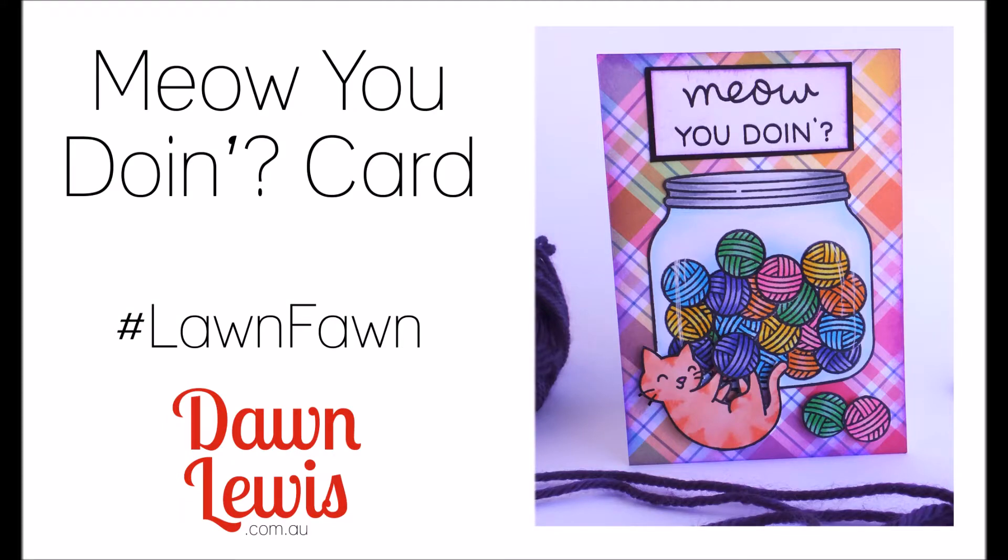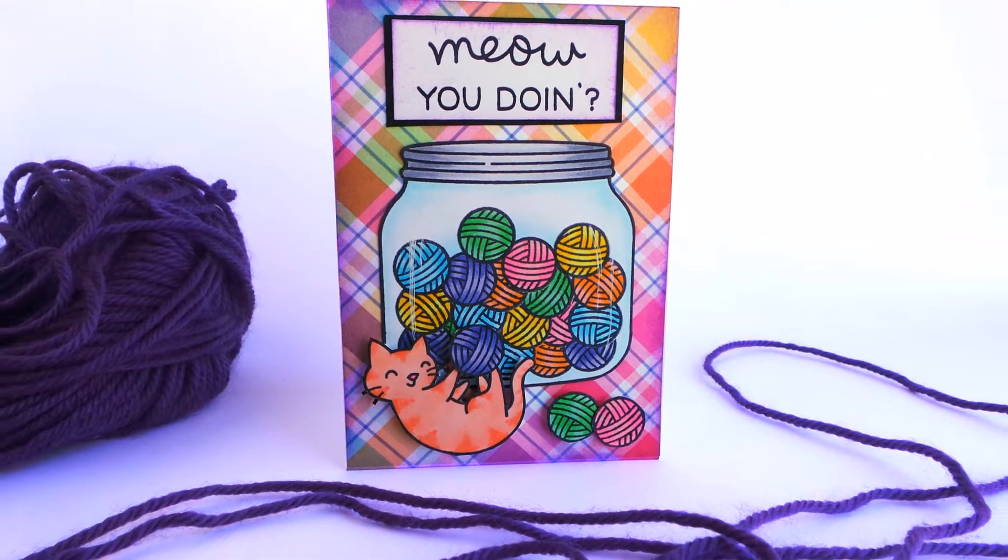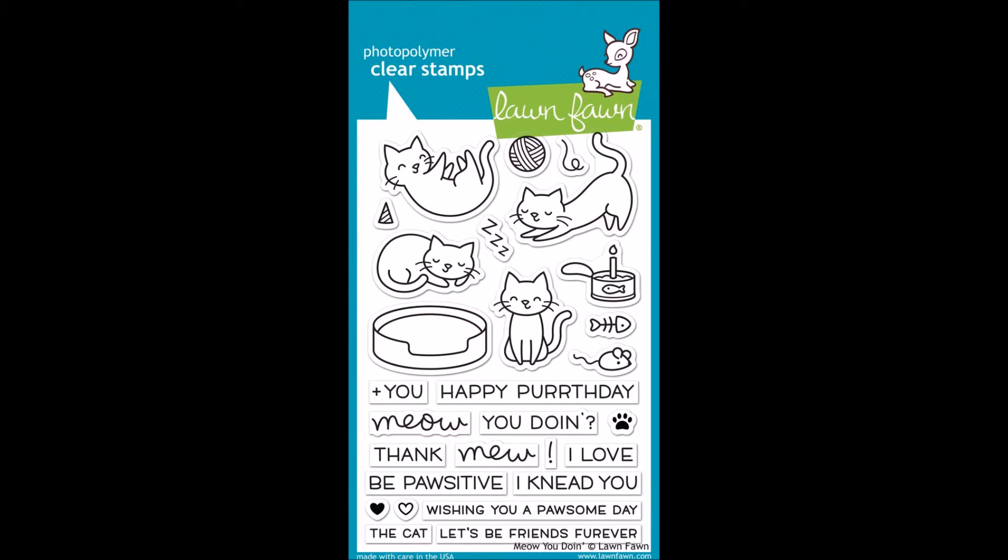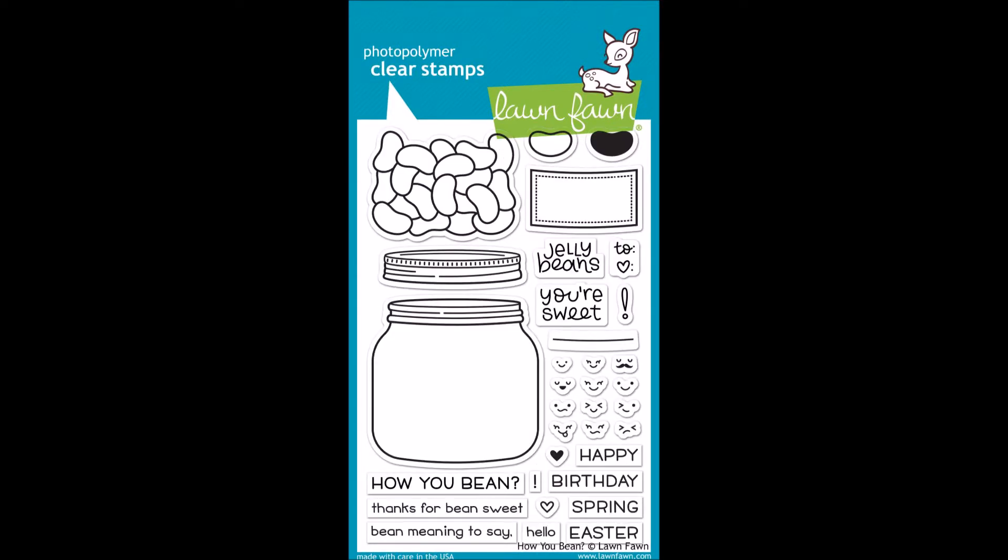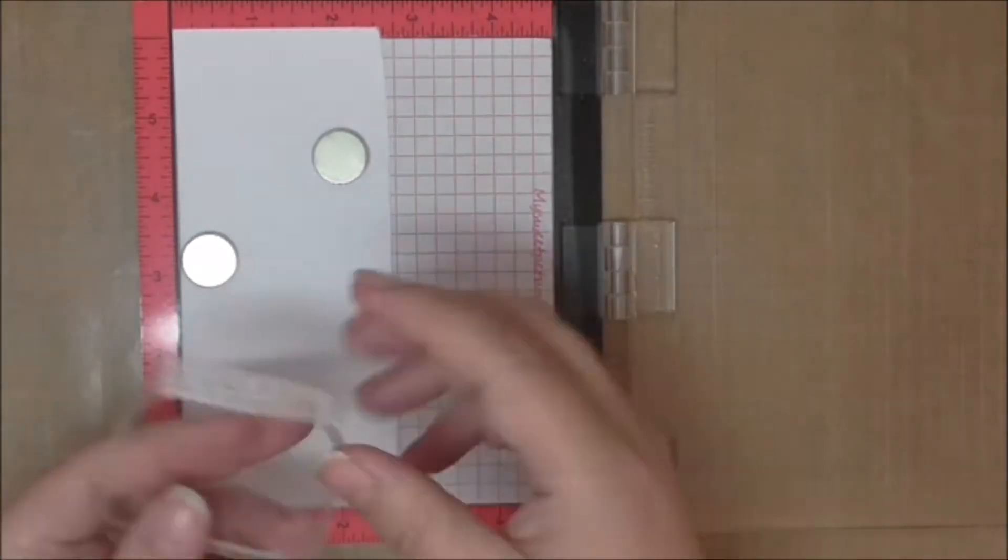Hi, Dawn Lewis here and today I have a Lawn Fawn project for you. Yes, there's a kitty on there. I'm using some of the stamps from the last release including Meow You Doing, How You Been, and the gorgeous Just For You. It's a little older but I use it all the time.